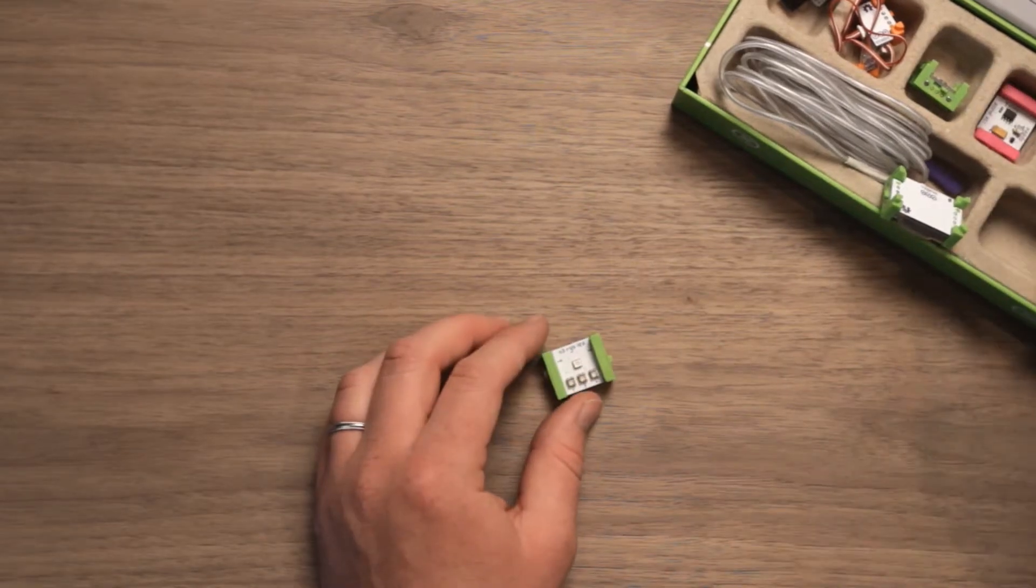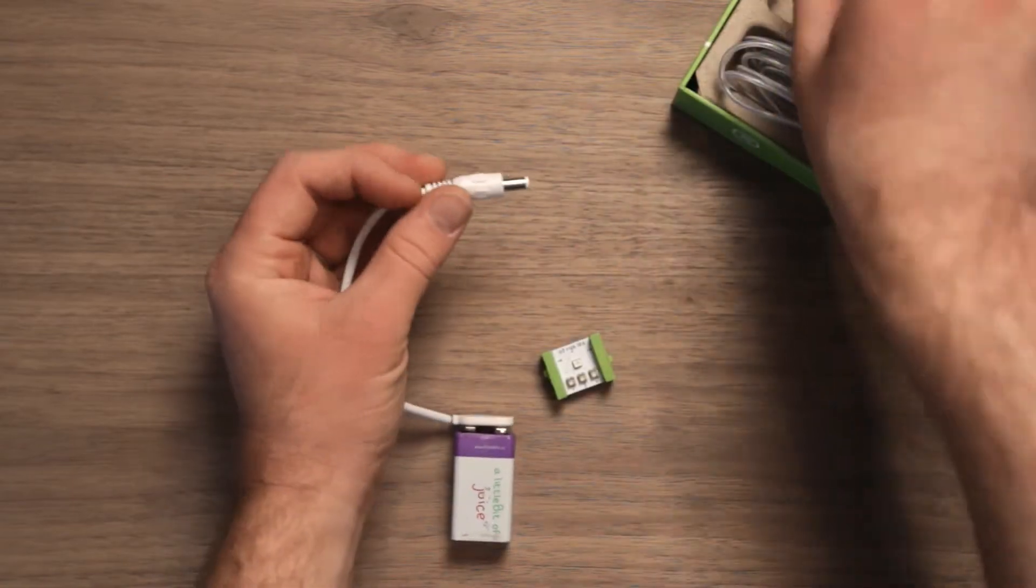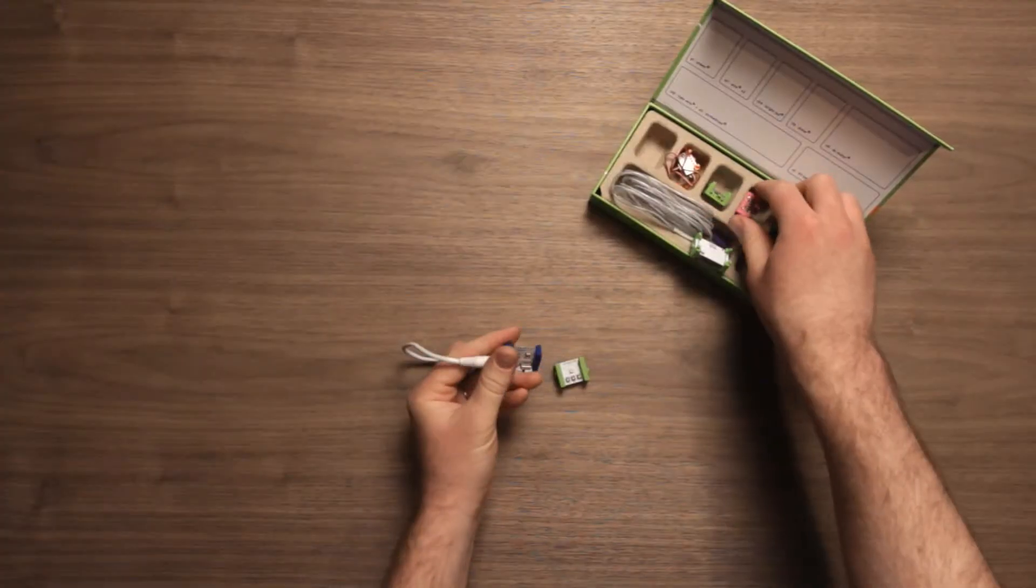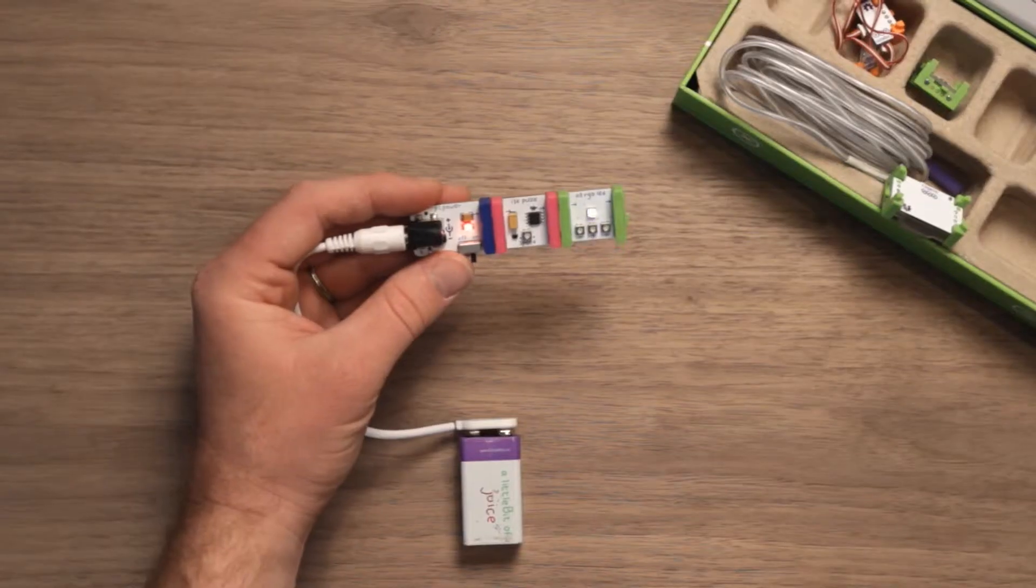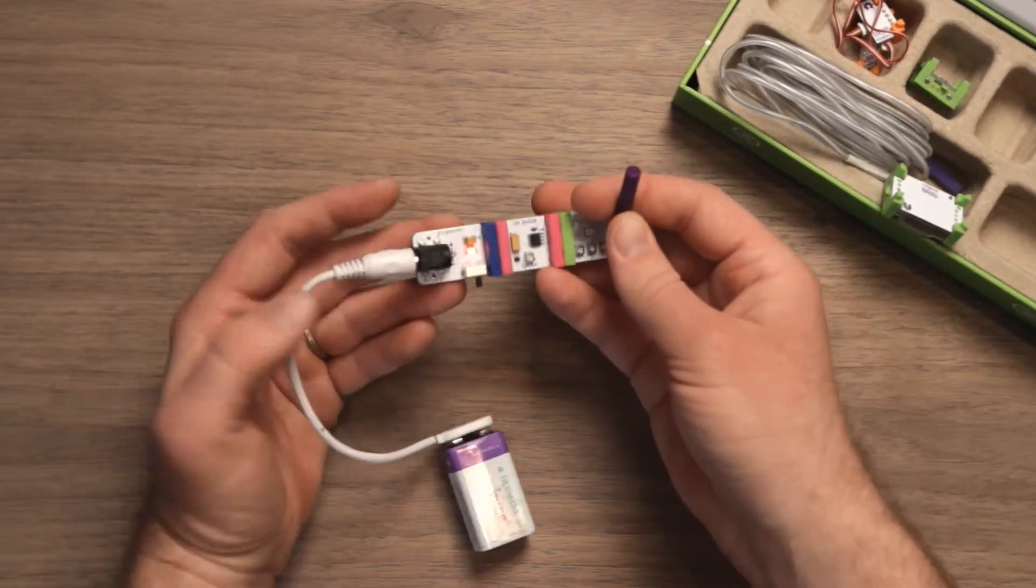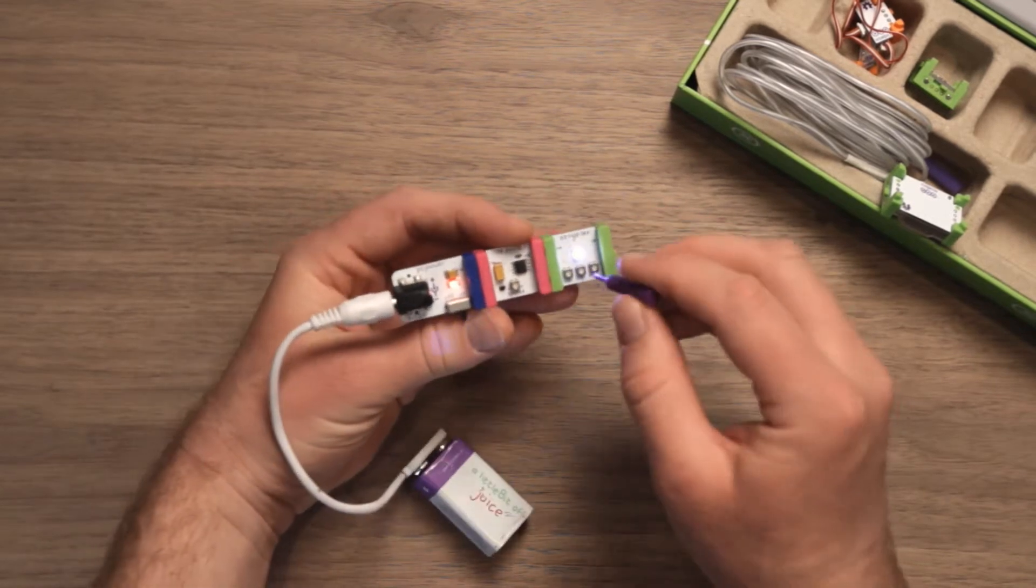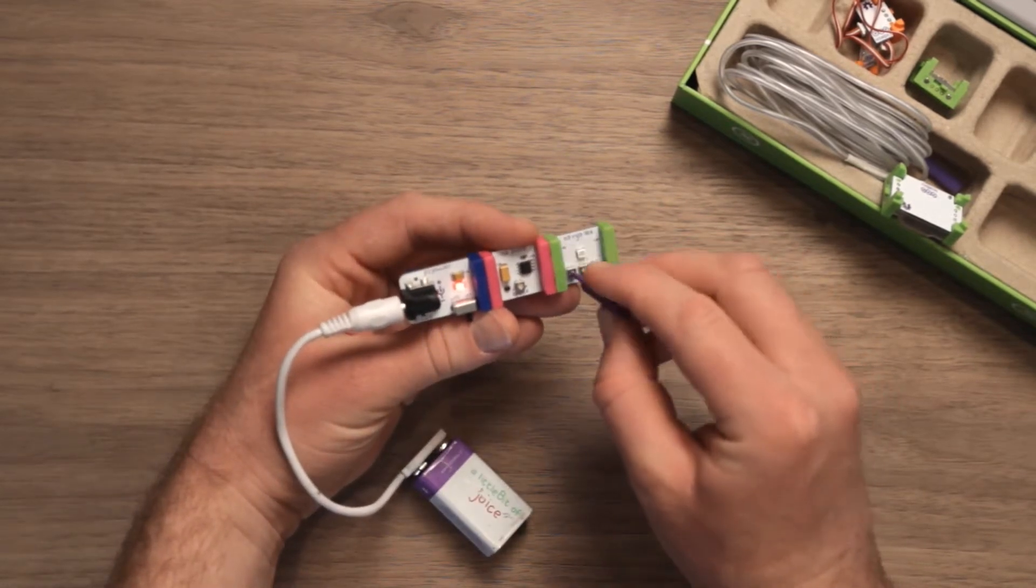So for an example, if we take our battery and we take our power, and we take a little pink bit—in this case a pulse—and we plug it in, we can take a screwdriver and actually adjust the RGB values.